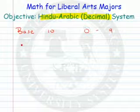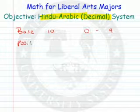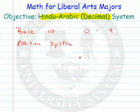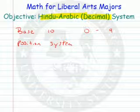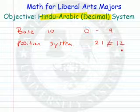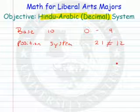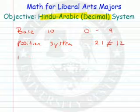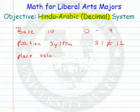It is a position system, so the position in which I place the digits matters. 21 is not going to be the same as 12. Now remember, in the Egyptian system it didn't really matter where you put them. In this system, it does. And that position is called its place value.